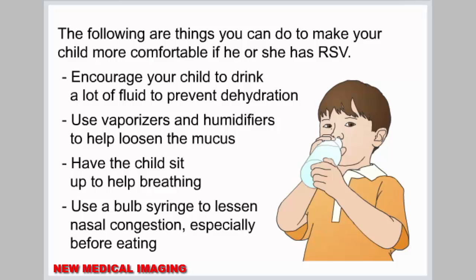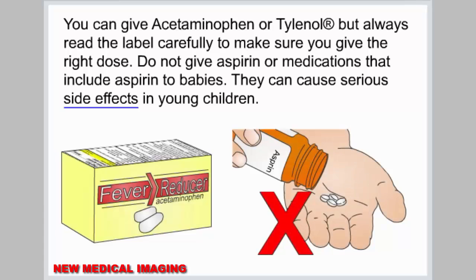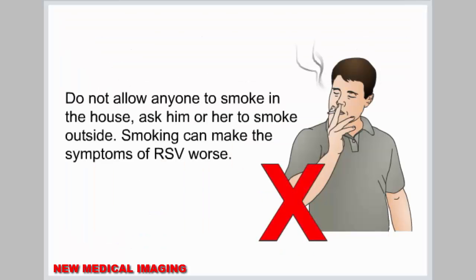You can give acetaminophen or Tylenol, but always read the label carefully to make sure you give the right dose. Do not give aspirin or medications that include aspirin to babies — they can cause serious side effects in young children. Do not allow anyone to smoke in the house; ask them to smoke outside, as smoking can make the symptoms of RSV worse.